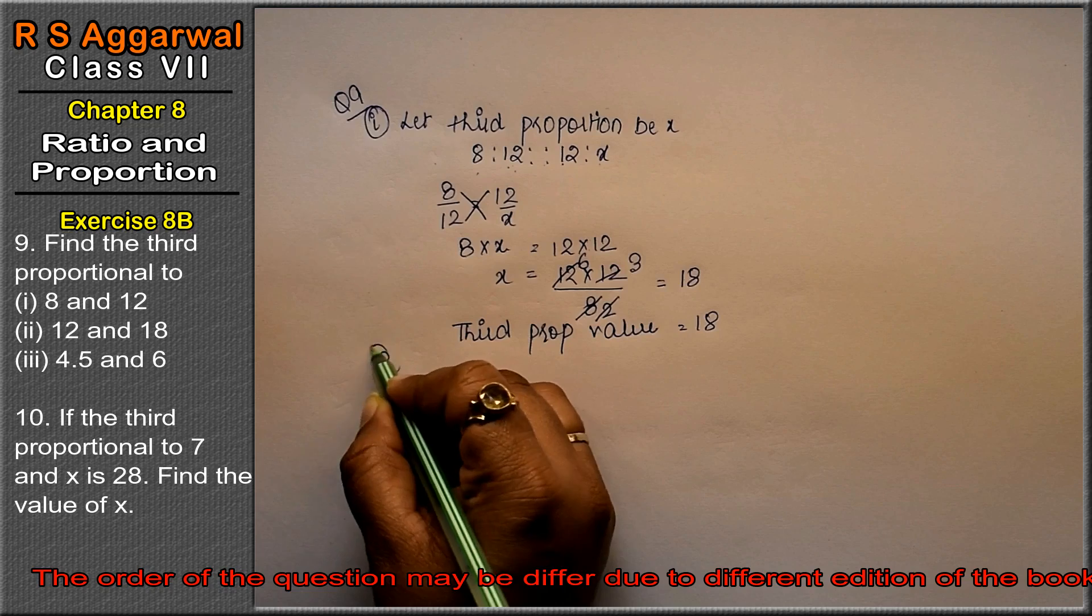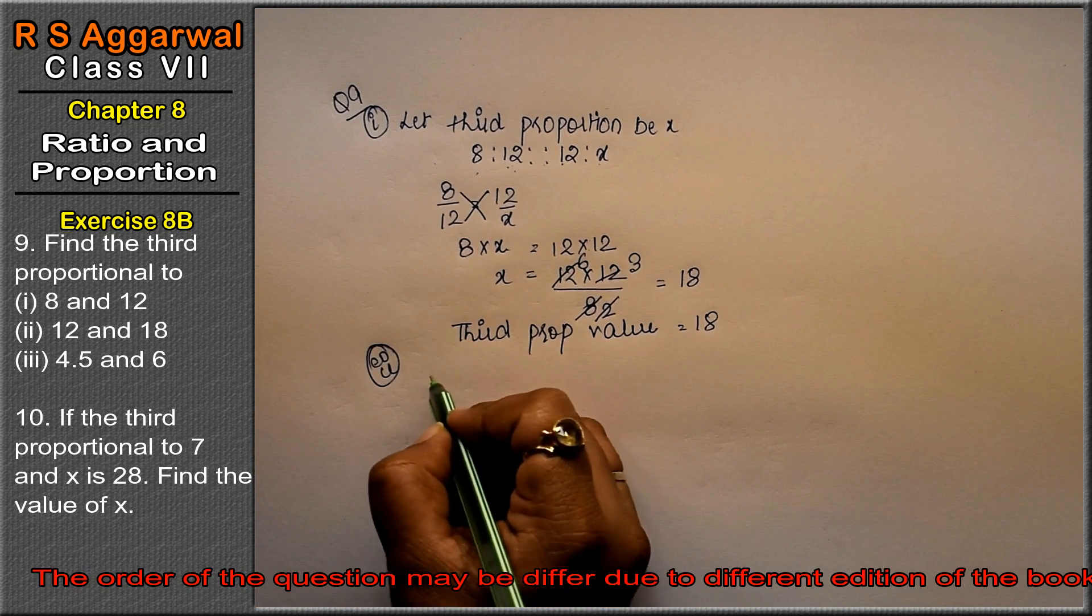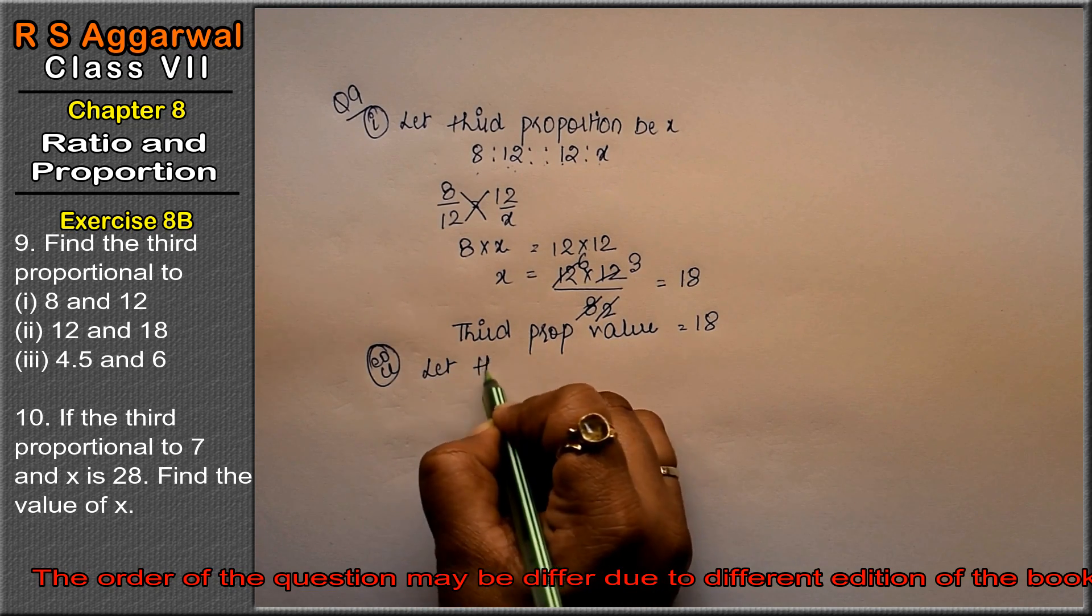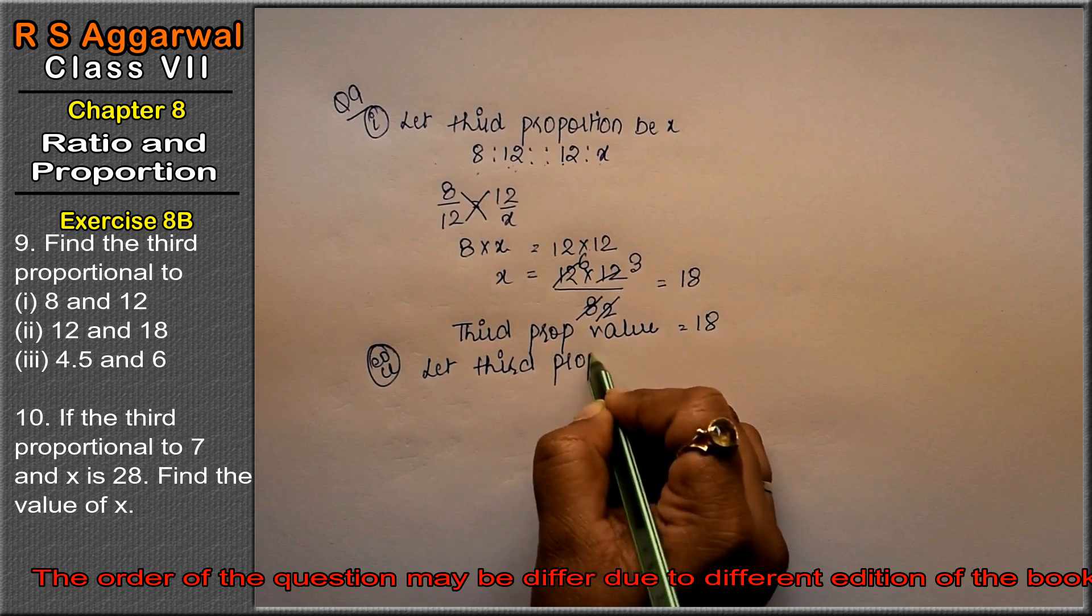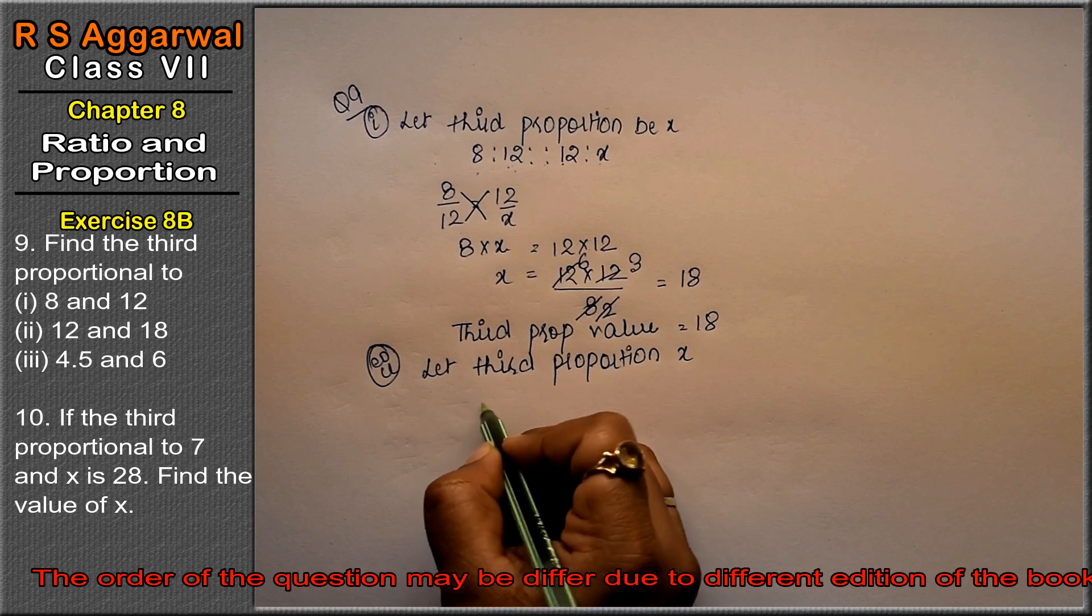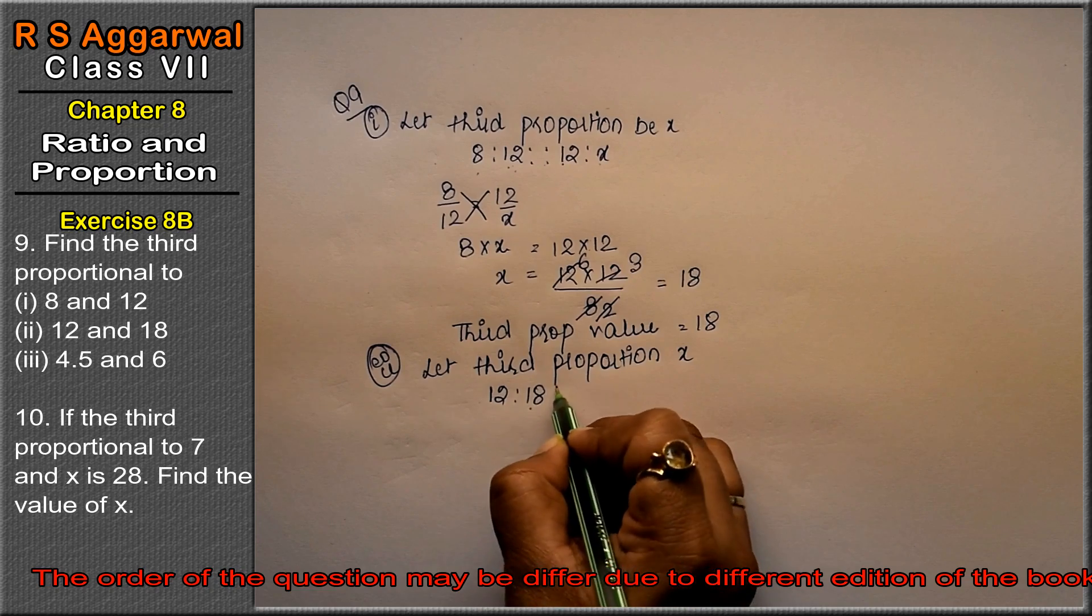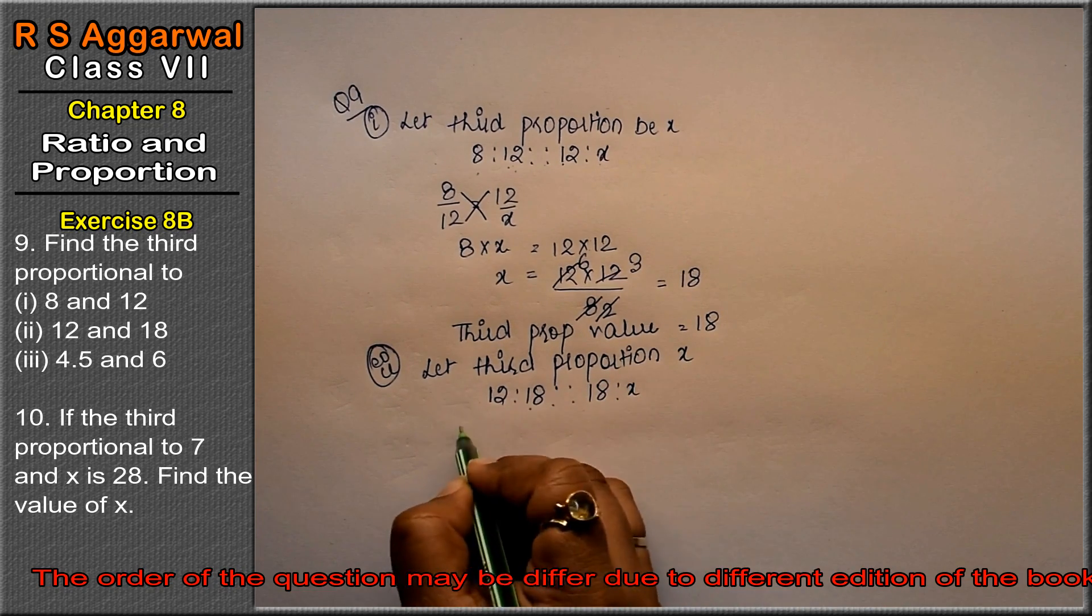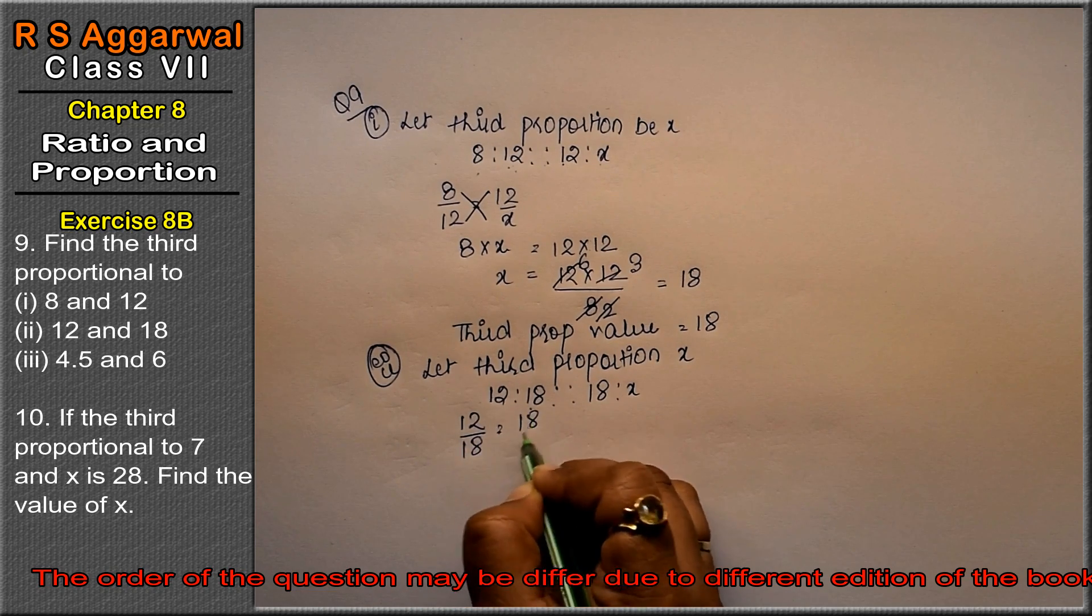Let's do second part. Second part is 12 and 18. So let third proportional be x. So 12 and 18 - 12 is to 18 is to 18 is to x. So what is this? 12 upon 18 equals to 18 upon x.